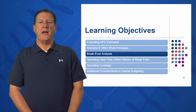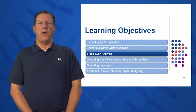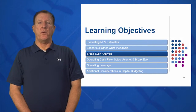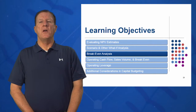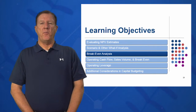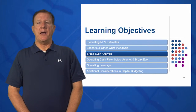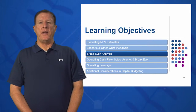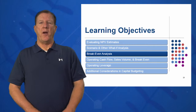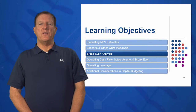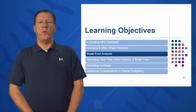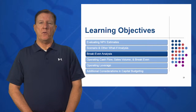We're going to look at cash breakeven point, where OCF is equal to zero, and we're going to look at financial breakeven point — how many widgets do I need to make and sell to breakeven on a financial basis, meaning the point where NPV equals zero.